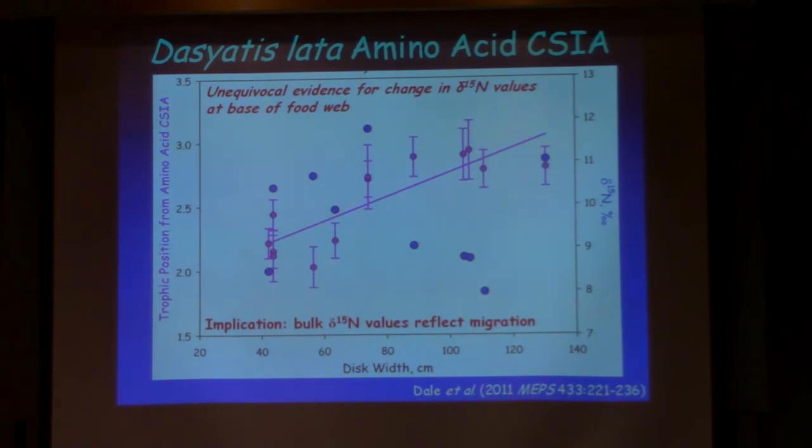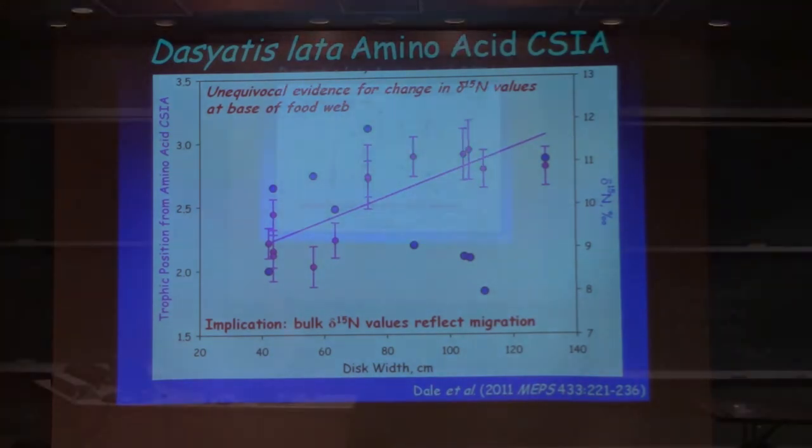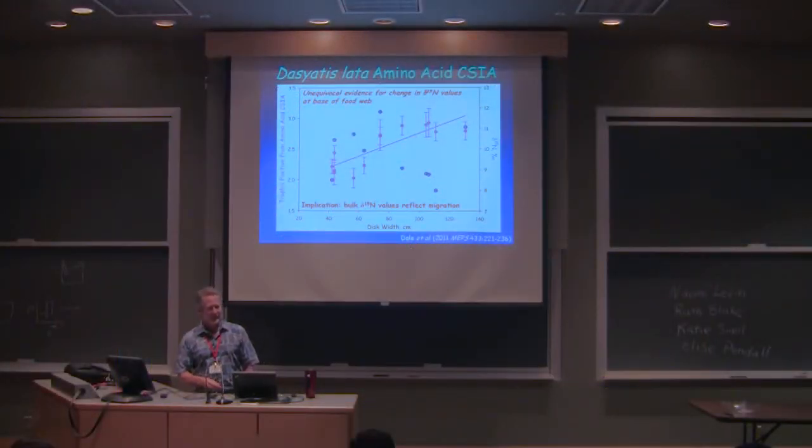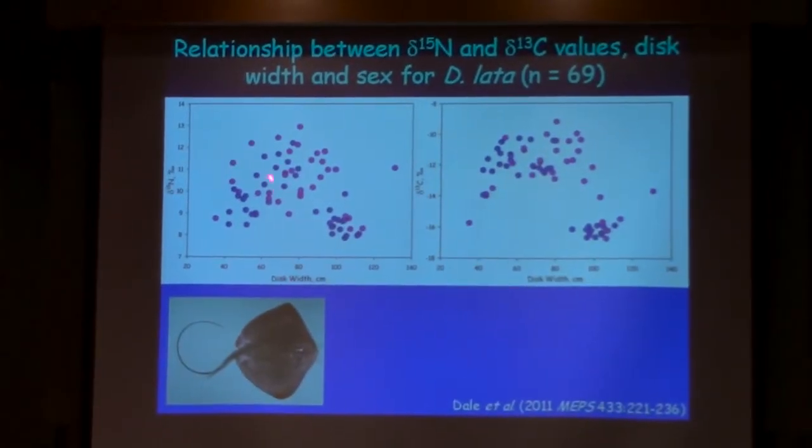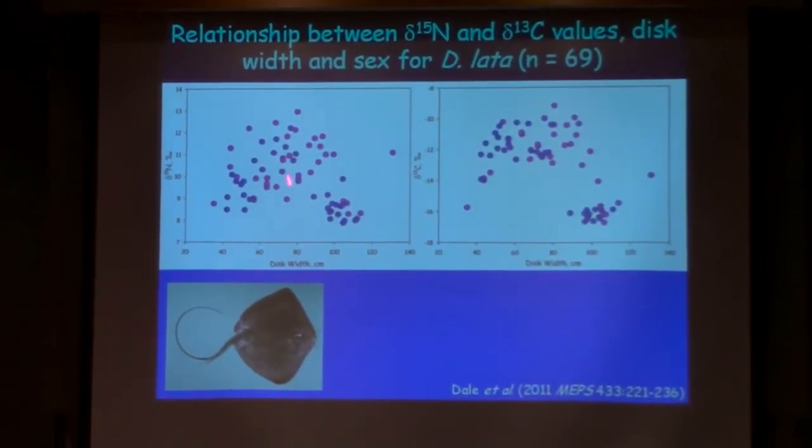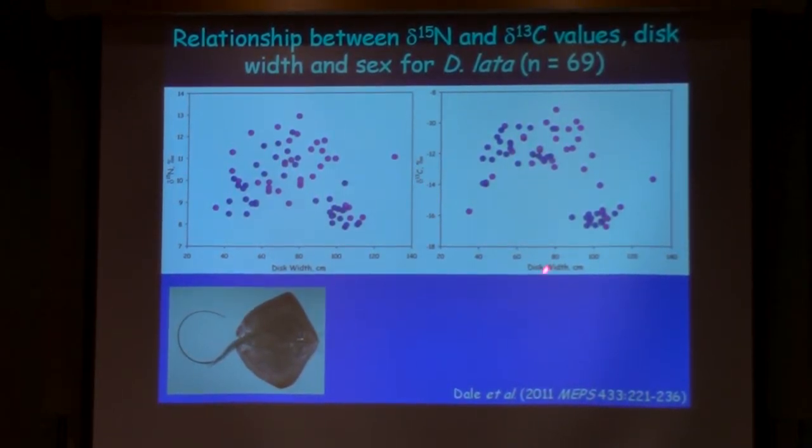Okay. So John had a big smile on his face. He went away and he called me up and said, Brian, I got to show you something. Can I come back to your office? And he plotted this up. He said, okay, I changed the designation on here. So it's delta 15n versus disc width by sex, where the blue are the boys and the pink are the girls. Delta 13c versus disc width, again, the same color designation. And I said, huh, that's kind of interesting. What are you driving at? Well, let me show you this one.